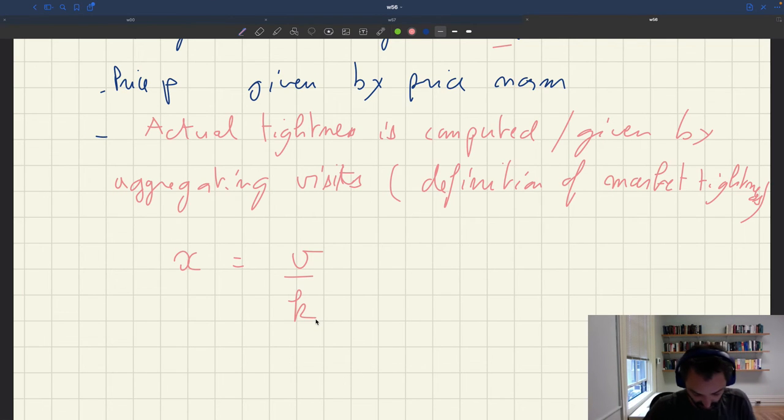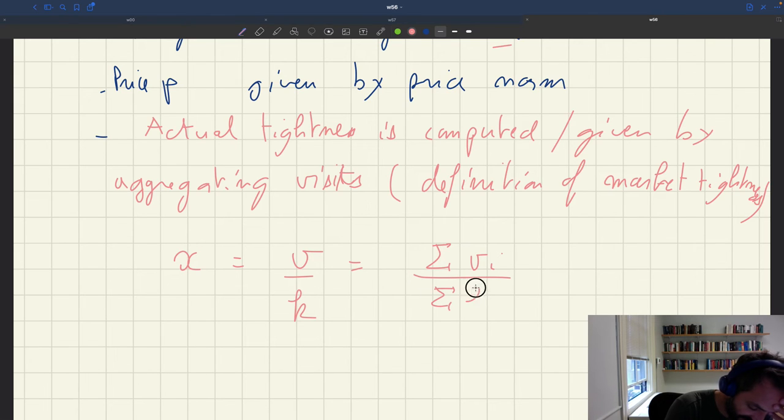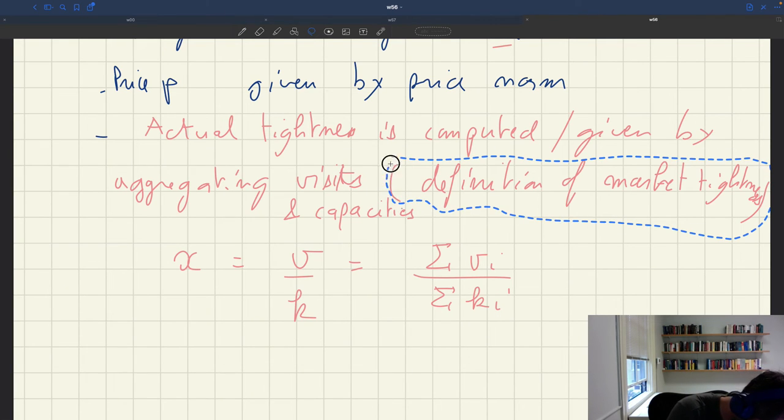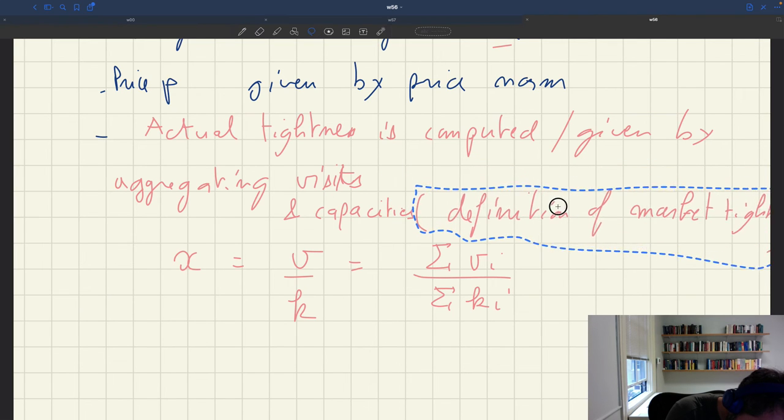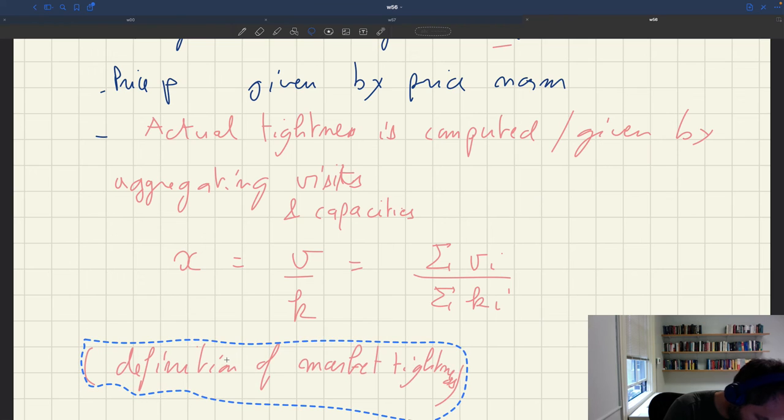v is the number of visits - if you want, it's the number of buyers. k is the number of services that are provided - it's the number of sellers, if you want. And so that's just the sum of the vi over the sum of the ki. By aggregating visits and capacities. So here, yes, it's just the definition of market tightness.